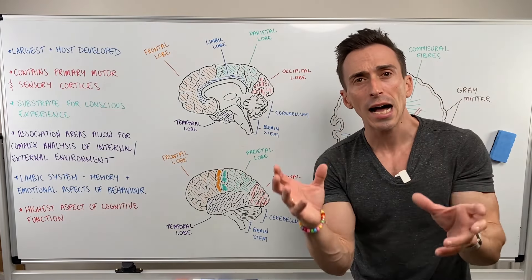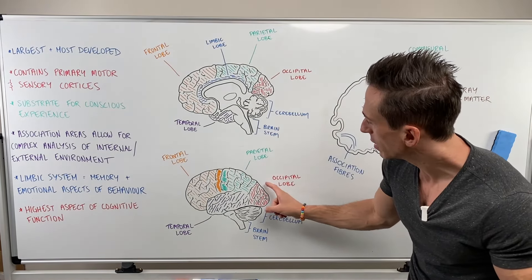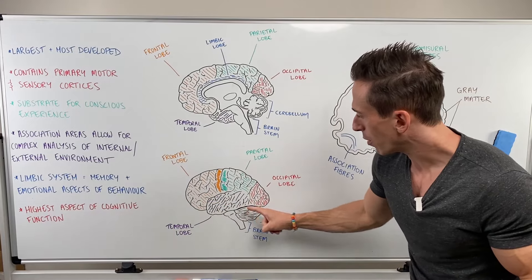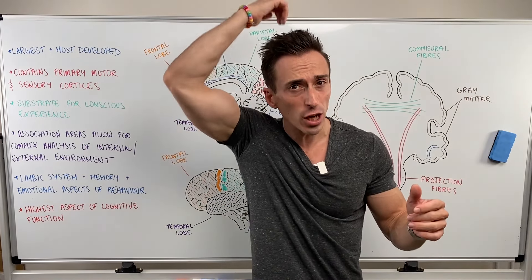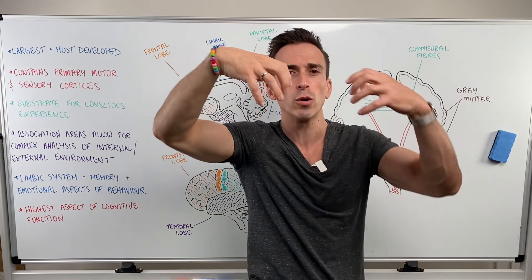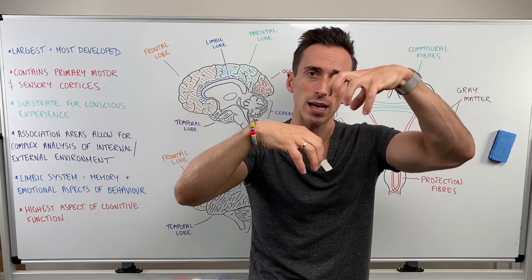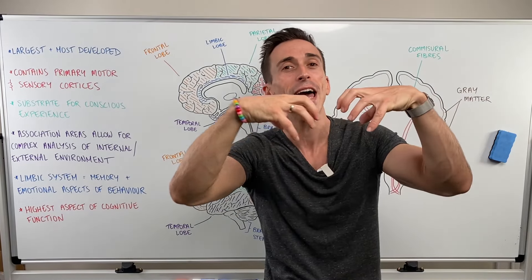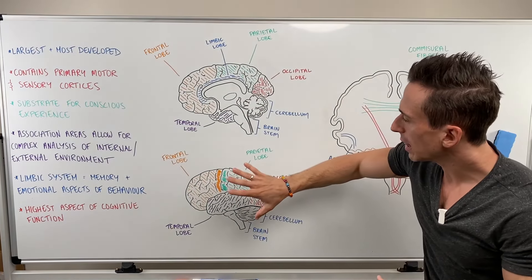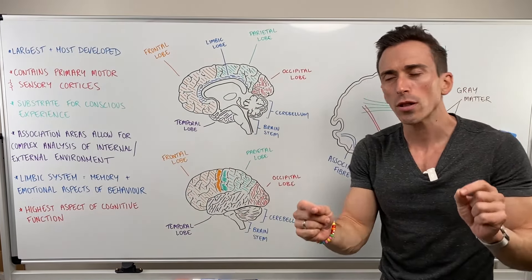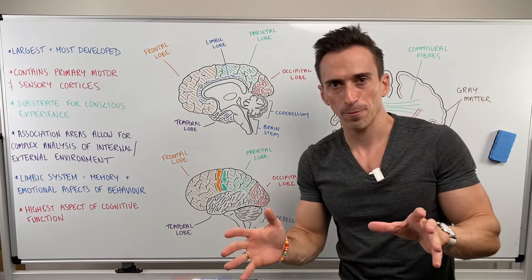Today, we're talking about the largest part of the brain, which is the cerebrum, which has a fissure or segmentation down the middle that separates it into two hemispheres — a left hemisphere and a right hemisphere. It's the largest part of the brain, but it's also the most developed part of the brain.